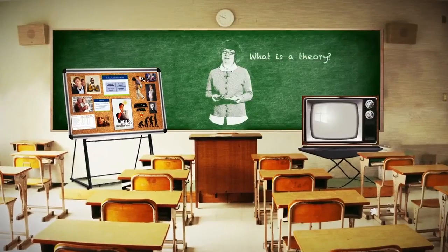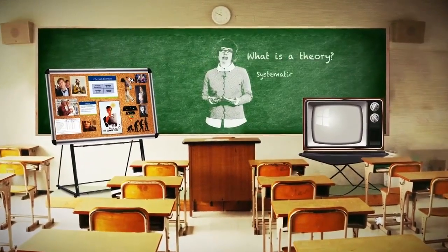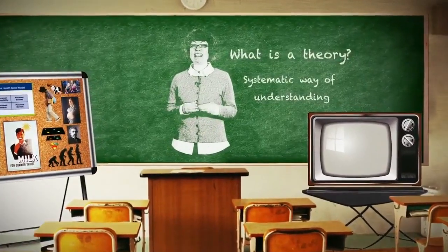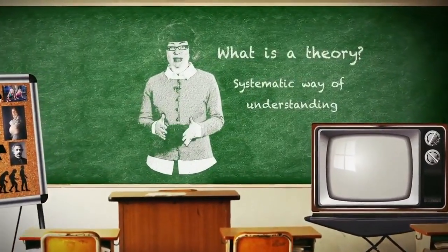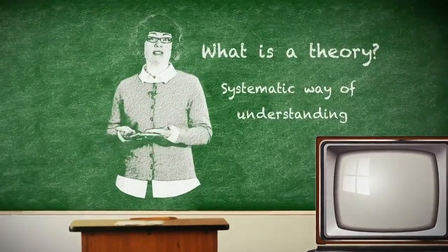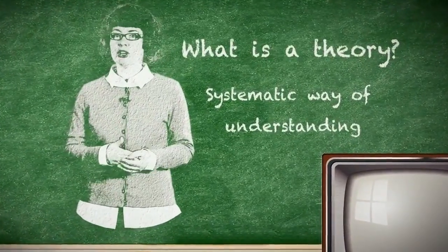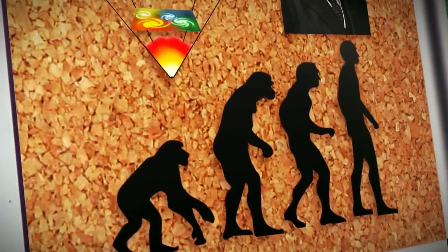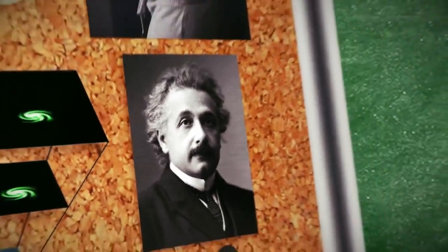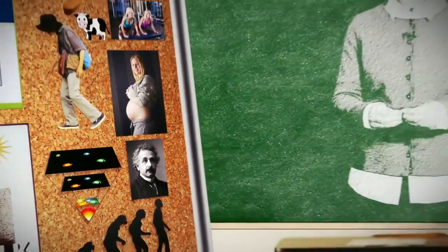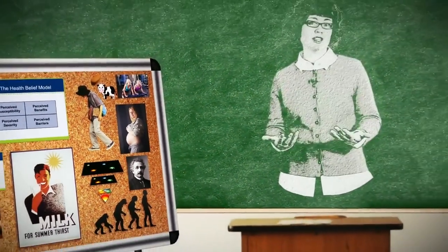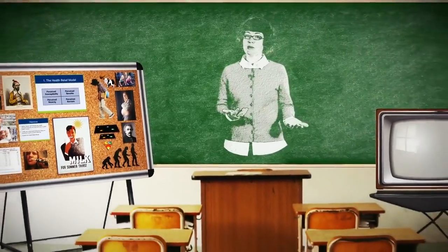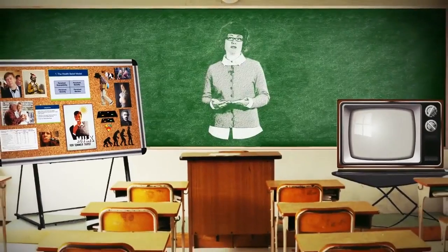What is a theory? A theory is a systematic way of understanding things. Theories synthesize bodies of evidence into key principles that explain and predict various phenomena. Think of the theories you might have heard of already — things like the Big Bang Theory, the theory of evolution, the theory of relativity. All these theories synthesize evidence into explanations for observations and they enable us to make informed predictions regarding expected outcomes given a particular set of circumstances.